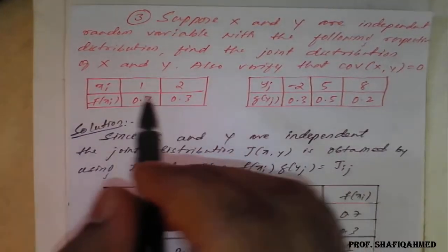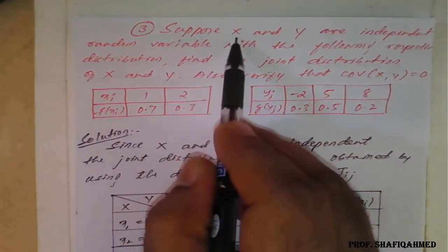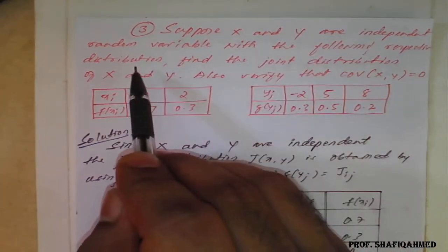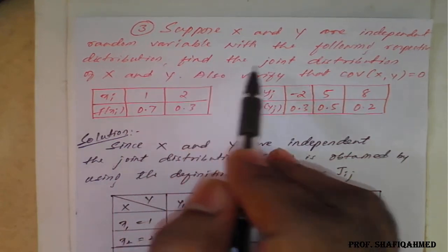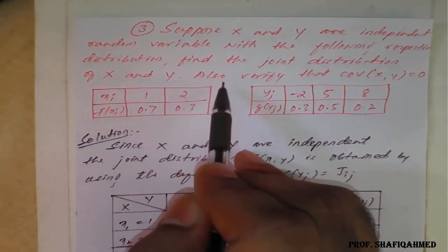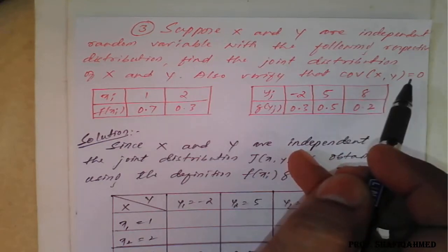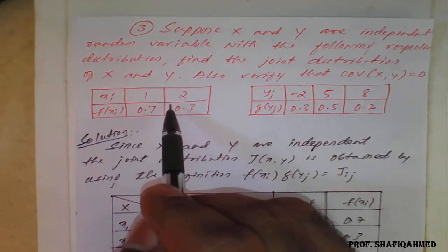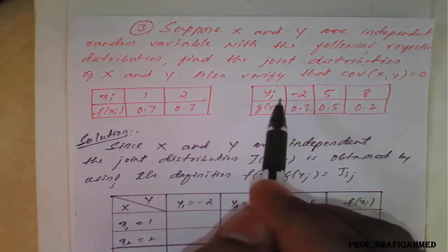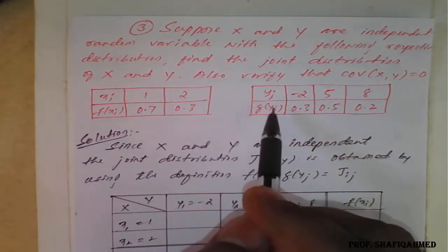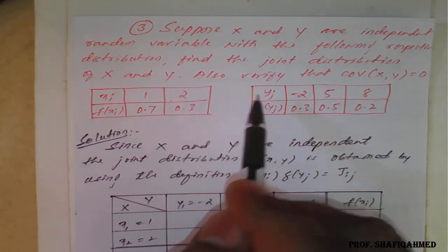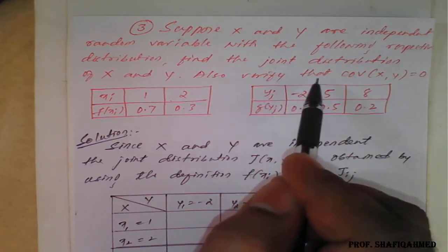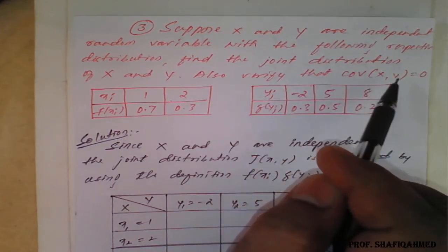Now we will see a new question: suppose x and y are independent random variables with the following respective distributions. Find the joint distribution of x and y, and also verify that covariance is equal to 0. In this question they have given the marginal probability distribution — x values with f(x), and y values with g(y). With the help of this marginal distribution, we need to prepare a joint probability distribution first, then find the covariance of x and y.